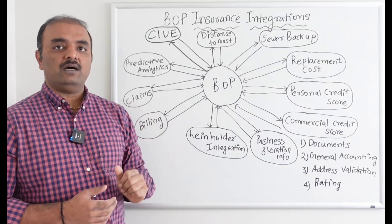Replacement cost — similar to homeowners — is the next integration. We need to understand that if a building is completely destroyed, how much it will cost the insurance company to rebuild it. This integration provides an estimated rebuild cost for that particular building, so the insurance company can appropriately account for total damage scenarios.